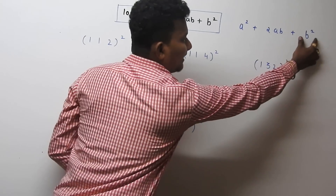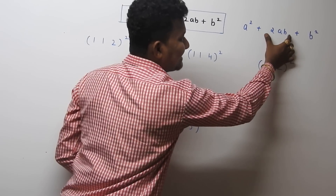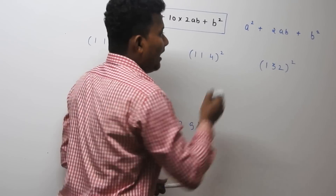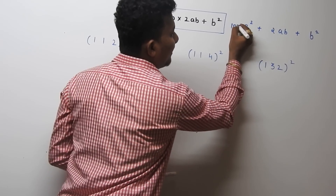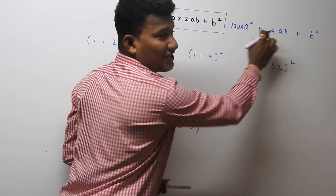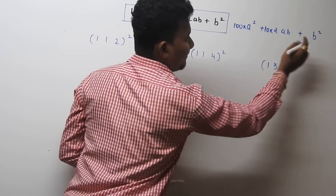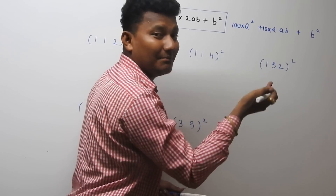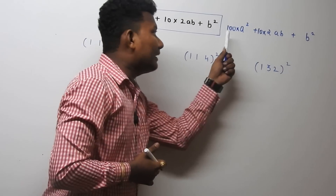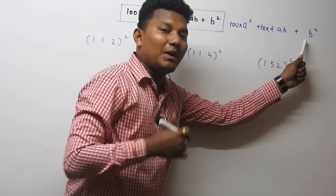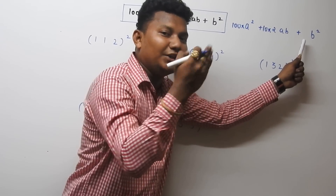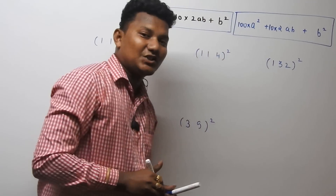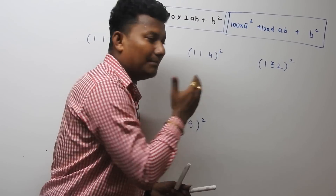Consider the three parts of the expansion. The last section has the units place, the second section has the tens place, and the first section has the hundreds place. So I will multiply the first section by 100, the second section by 10, and the last section by 1. This gives us the formula: 100·a² + 10·(2ab) + b².